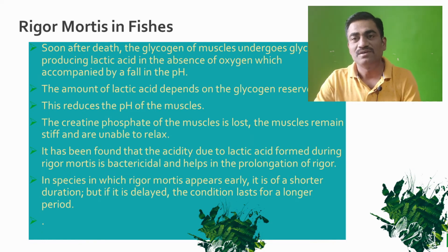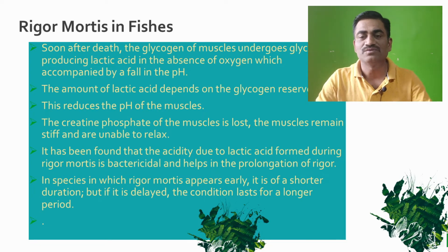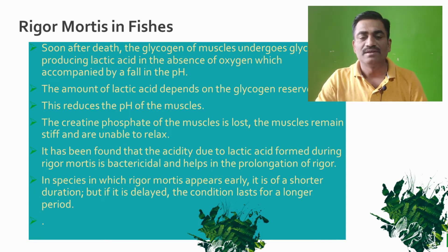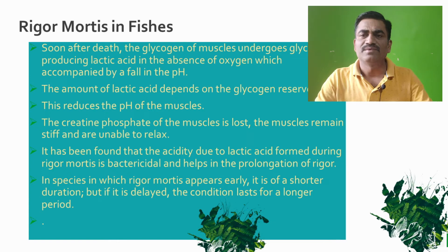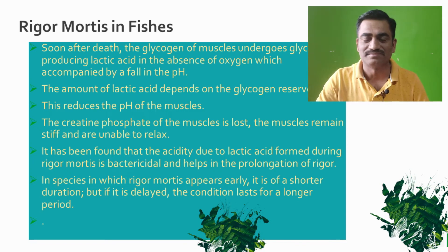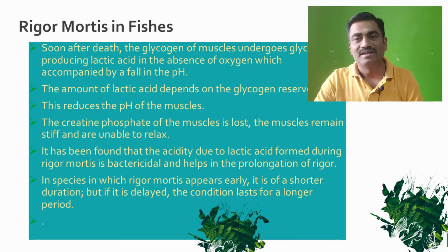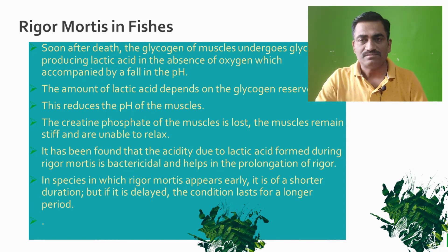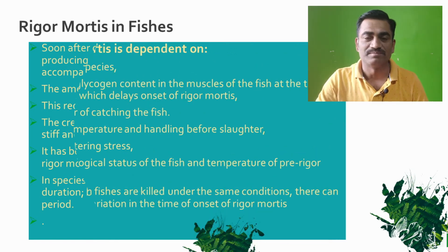In species in which rigor mortis appears early, it is of shorter duration; but if it is delayed, it lasts for longer periods. If rigor mortis starts earlier, it will finish earlier and is not prolonged. If the rigor mortis is delayed, then the rigor mortis process is prolonged — that is, the preservation or good condition period of the fish is for a higher duration of time.